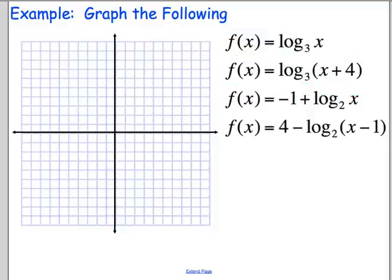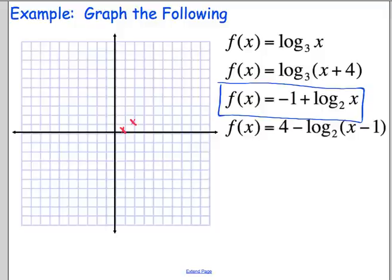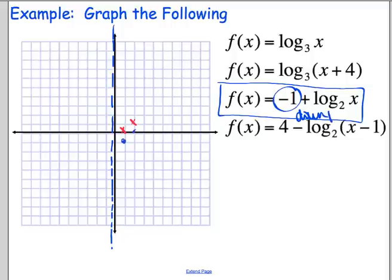The next one deals with log base 2, so we're switching the base. A regular base 2 graph has a vertical asymptote on the y-axis, the point (1, 0), and the point (2, 1). But this graph has a minus 1 in front of the whole thing — that's the k value. We don't write it at the end to avoid confusion with x minus 1; it applies to the whole function. So we move the entire function down one unit. The vertical asymptote doesn't change. We move those other two points down one unit each and sketch the picture.